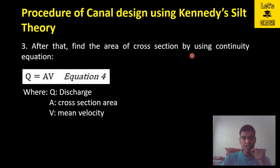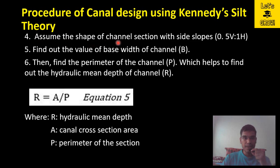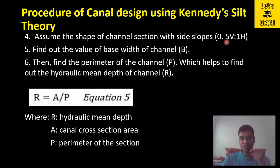Step 3: Find the area of cross section using the continuity equation: Q = A × V, where Q is discharge, A is cross-sectional area, and V is mean velocity. Since Q is known and V has been calculated, the area A = Q / V. Step 4: Assume the shape of the channel section with side slope of 0.5 vertical to 1 horizontal for a trapezoidal channel.